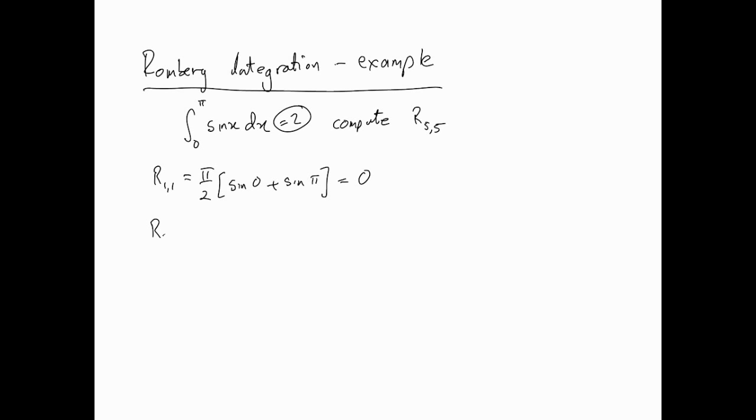All right, so let's see how we calculate the other values. So this seems going to be π over 4, and then you'll have sine 0, plus you'll have one extra value in this case, which is sine π/2, plus sine π. Now that works out to be 1.57079633.